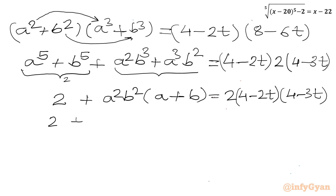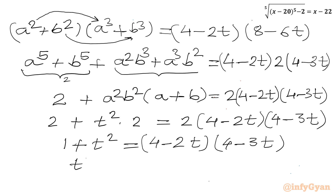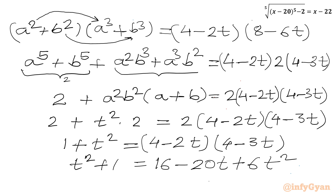Substituting ab equal to t, so a squared b squared equals t squared, and a plus b equals 2. We get 2 plus t squared times 2 equal to 2 times (4 minus 2t) times (4 minus 3t). Dividing by 2: 1 plus t squared equal to (4 minus 2t)(4 minus 3t). Expanding the right side: 16 minus 20t plus 6t squared. Rearranging: 5t squared minus 20t plus 15 equal to 0.